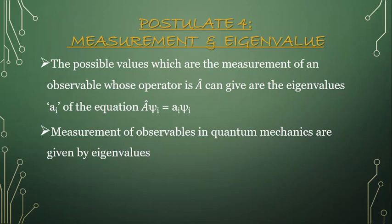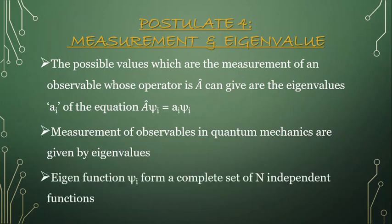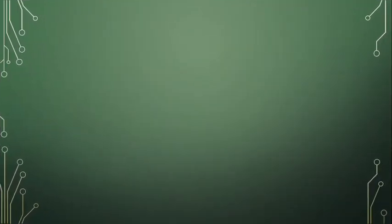We already know these eigenvalues are going to be real, and that is why they are the measurements of observables in quantum mechanics. The condition on the wave function is that the eigenfunction ξᵢ forms a complete set of N independent functions. So there is a completeness condition which this eigenfunction has to satisfy, which will be derived and discussed in coming classes. This is some detail about measurement and eigenvalue, but let us understand how it works through an example.